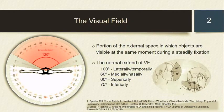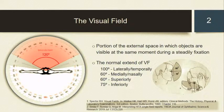If we divide our visual area into four quadrants — temporal, nasal, superior, and inferior — the extent of the temporal field is the maximum, at around 100 degrees, whereas the other three quadrants are restricted to around 50 to 60 degrees due to the nose, forehead, and cheekbone.